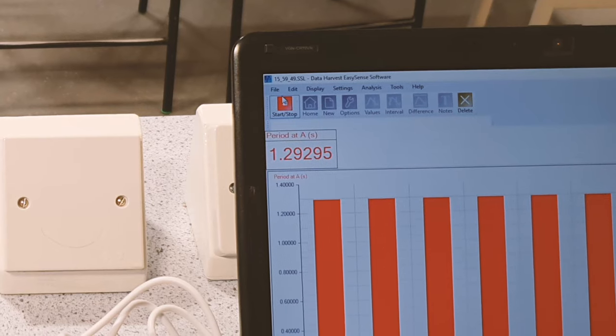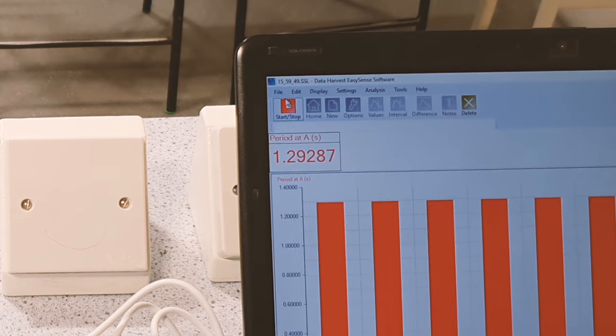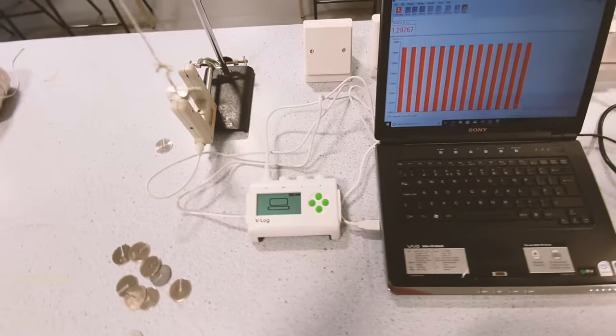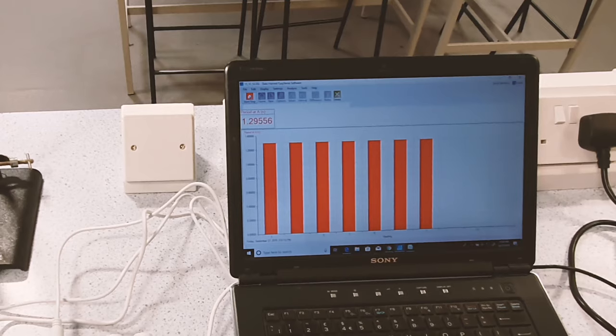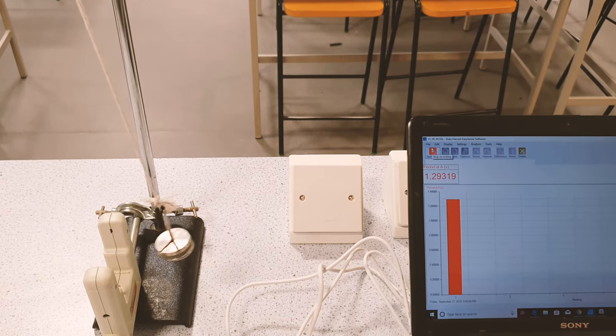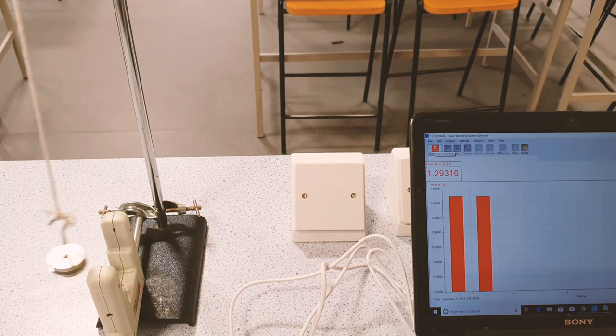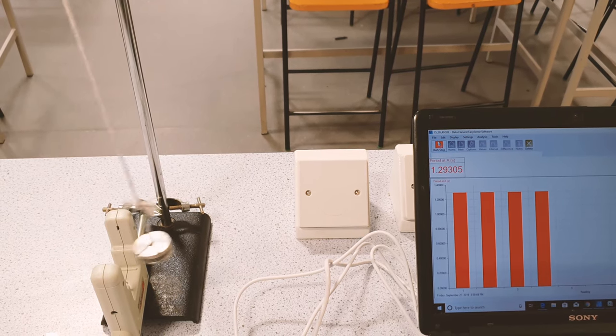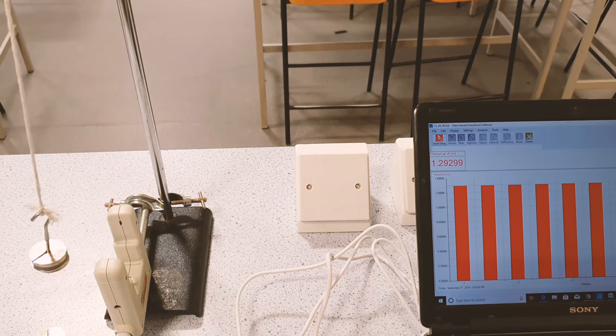Understanding how the techniques that we use to take measurements affect their accuracy is a crucial understanding for A-level physics. It's only because we're reading to like six significant figures here that we see that very small change every swing. It's because the beam is being broken for a slightly longer time, so there's a slightly shorter time in between those breaks.